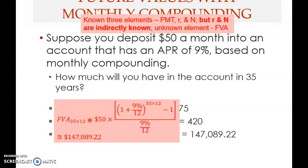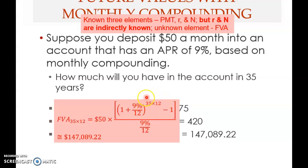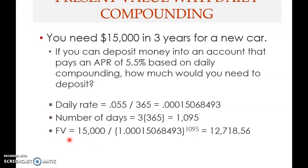This is a future value of annuity problem. The only difference from before is that r is not given directly — you're given APR and the compounding frequency m, so you must adjust to get r. That's the first adjustment. The second adjustment is computing capital N. Once both adjustments are made, you get the answer.